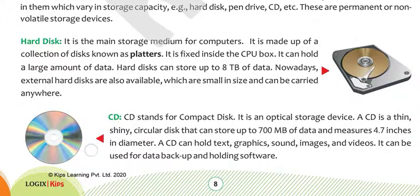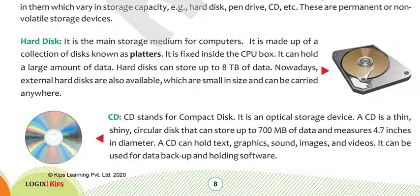CD stands for Compact Disk — it is also known by that name. It is an optical storage device. A CD is a thin, shiny, circular disk that can store up to 700 MB of data and measures 4.7 inches in diameter. So your compact disk can store 700 megabytes of data and its diameter is 4.7 inches.